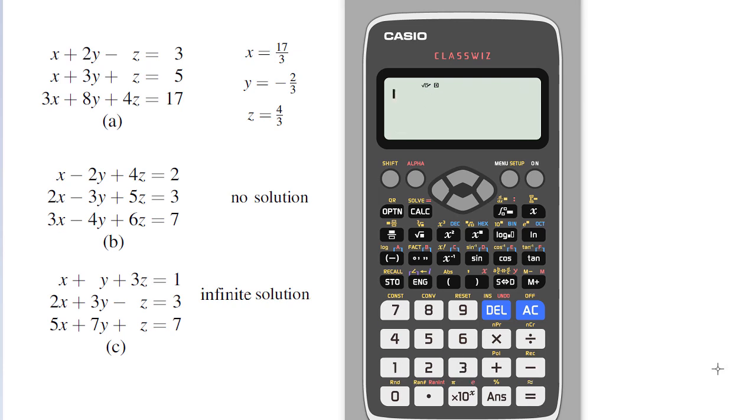I have chosen three examples in which example A has a particular solution, example B has no solution at all, and example C has infinite solution. So let's see how our Casio ClassWiz 991EX calculator will respond in these situations.